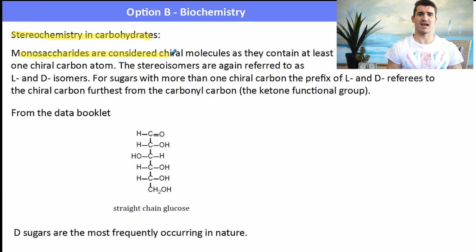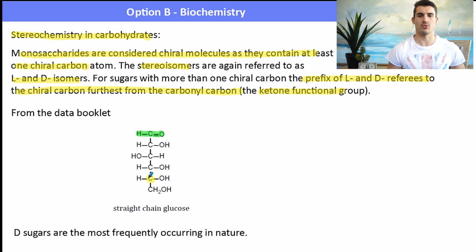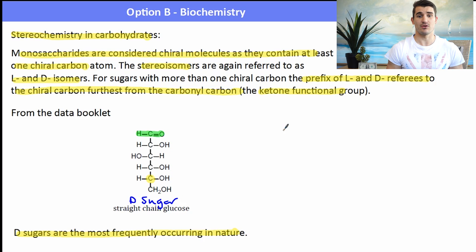We also have stereochemistry in carbohydrates. Carbohydrates contain a number of chiral carbons. The stereoisomers are again referred to as L and D, and for sugars with more than one chiral carbon we refer to the chiral carbon furthest away from the ketone or carbonyl functional group. From the data booklet we're given the straight-chain glucose molecule with the carbonyl carbon at the top, and the relevant chiral carbon furthest away is at the bottom. With the OH on the right-hand side, that is the D form; with the OH on the left, that's the L form.